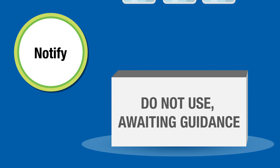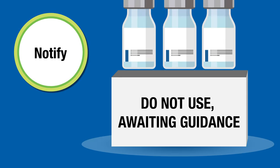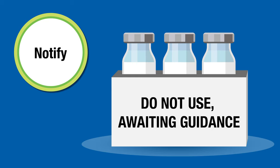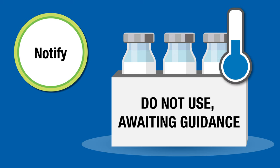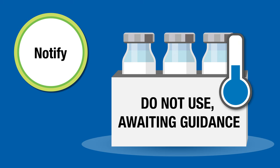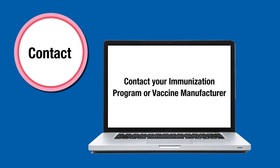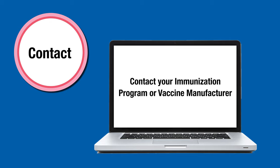First, label the exposed vaccines as 'do not use — awaiting guidance,' then place them in a separate container. Next, store the labeled container at the appropriate temperature. Do not automatically discard vaccines until directed to do so. Next, contact your immunization program or the vaccine manufacturer for guidance.